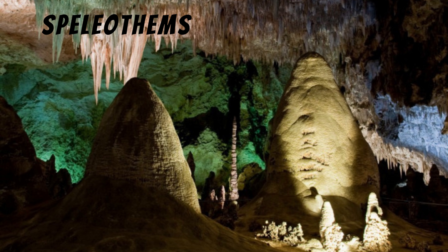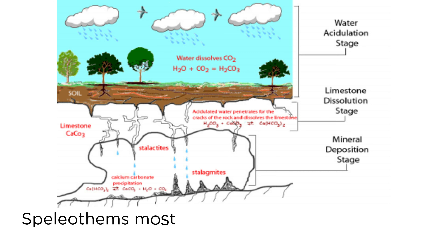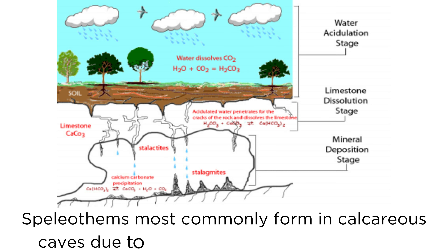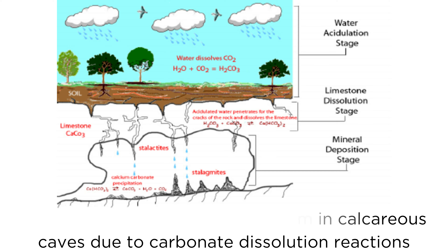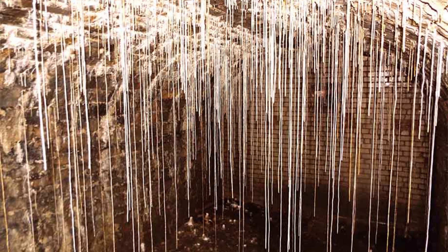Depositional Landforms of Karst Topography — Speleothems. All types of deposits in the caverns are collectively called speleothems, of which calcite is the common constituent. Speleothems most commonly form in calcareous caves due to carbonate dissolution reactions. They can take a variety of forms depending on their depositional history and environment.